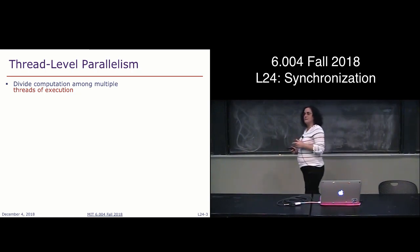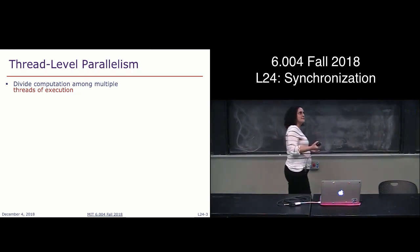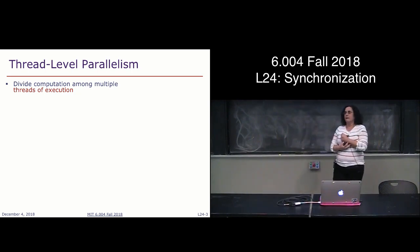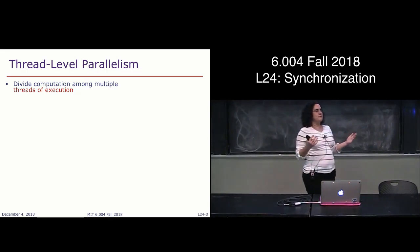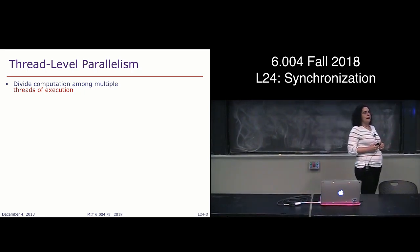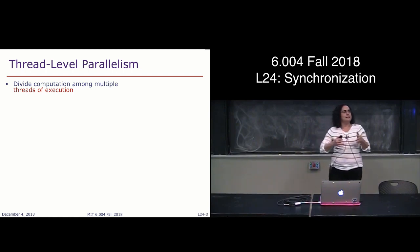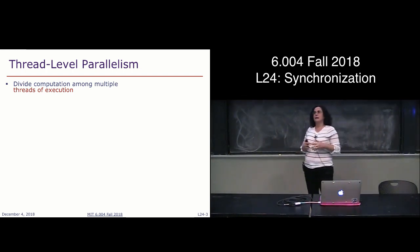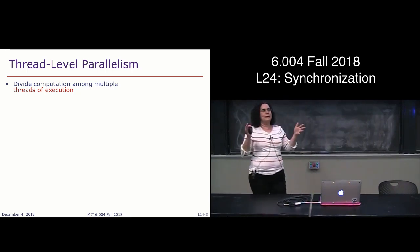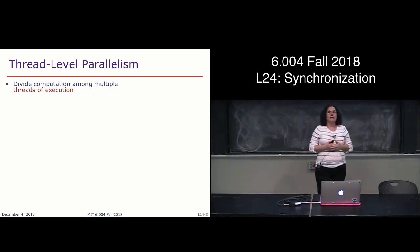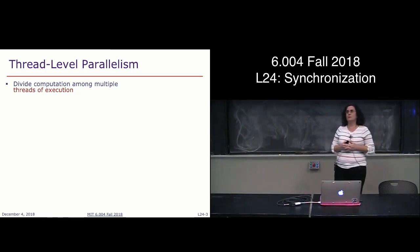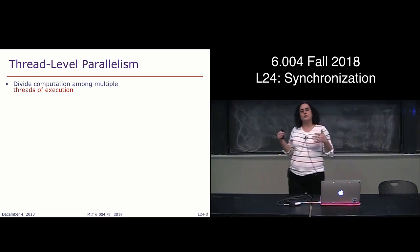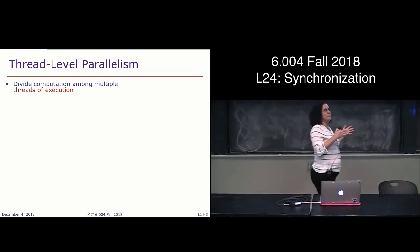So far we've learned about how we can run multiple processes on the same CPU, where our operating system was in charge of switching from one process to another via time sharing. You can imagine that even within a single process, you might want to further subdivide that process into multiple computation threads, which may or may not be able to be executed in parallel. Especially as technology has evolved in the last decade or so, we've moved to a world where instead of continuing to improve upon single-processor CPUs, we've started to implement multi-core CPUs.